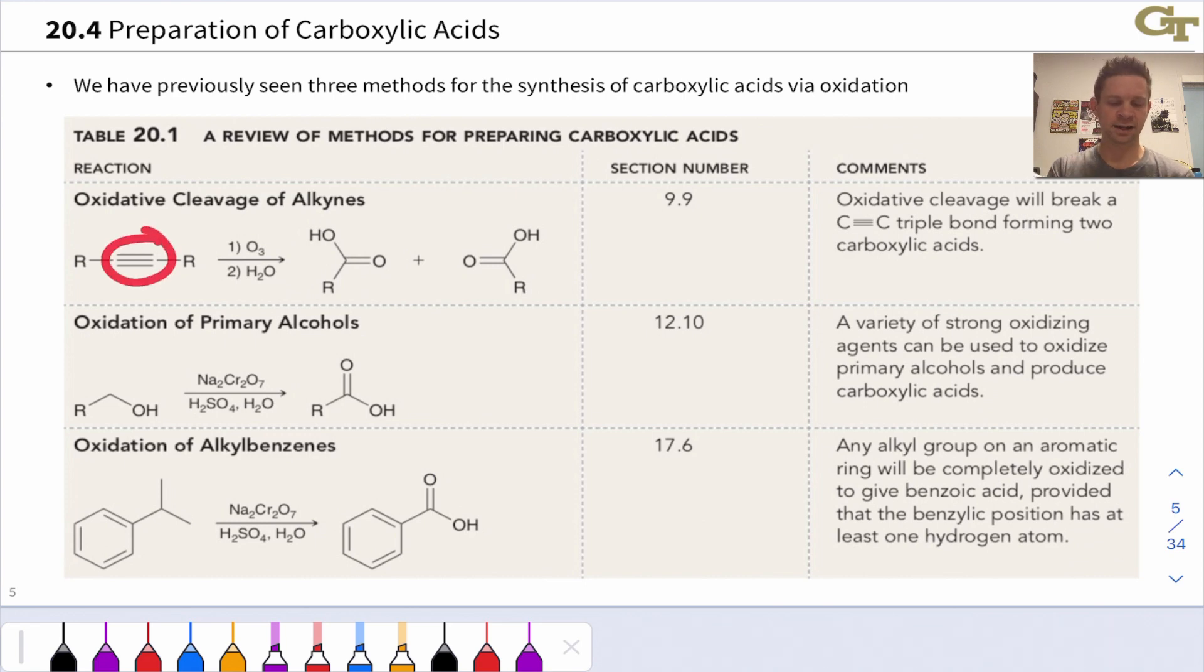We can start with an alkyne or alcohol, which are more reduced functional groups, and oxidize those groups up to carboxylic acids, which are relatively oxidized, kind of one step away from CO2, if you think about it.